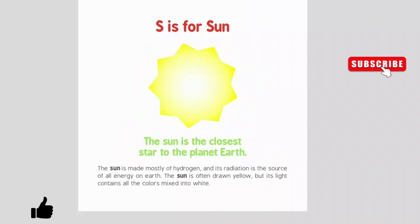S is for sun. The sun is the closest star to the planet Earth. The sun is made mostly of hydrogen, and its radiation is the source of all energy on Earth. The sun is often drawn yellow, but its light contains all the colors mixed into white.